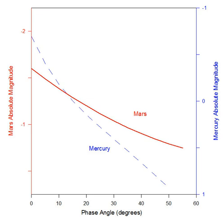The width of the opposition surge for Mercury indicates that both the compaction state of the regolith and the distribution of particle sizes on the planet are similar to those on the Moon. Early visual observations contributing to the phase curve of Mercury were obtained by G. Muller in the 1800s and by André-Lewis D'Angin in the mid-20th century. W. Irvine and colleagues used photoelectric photometry in the 1960s.